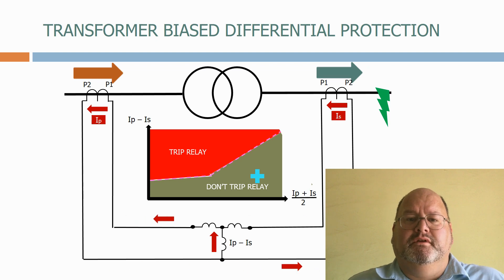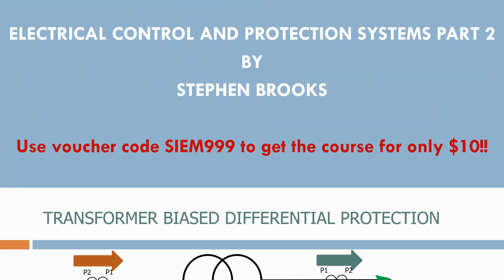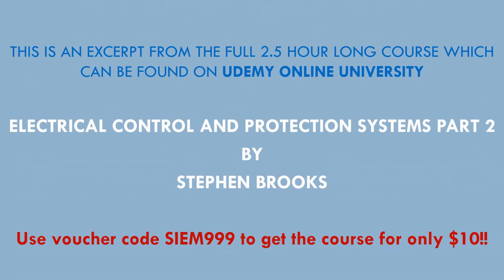The slope and pick-up values of the biasing curve can be set very precisely, making it very easy to identify whether the fault is on the transformer or not, without adding too much additional time delay.